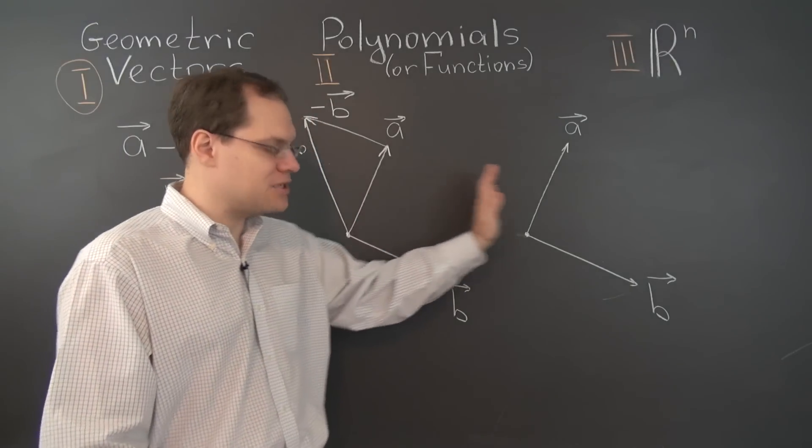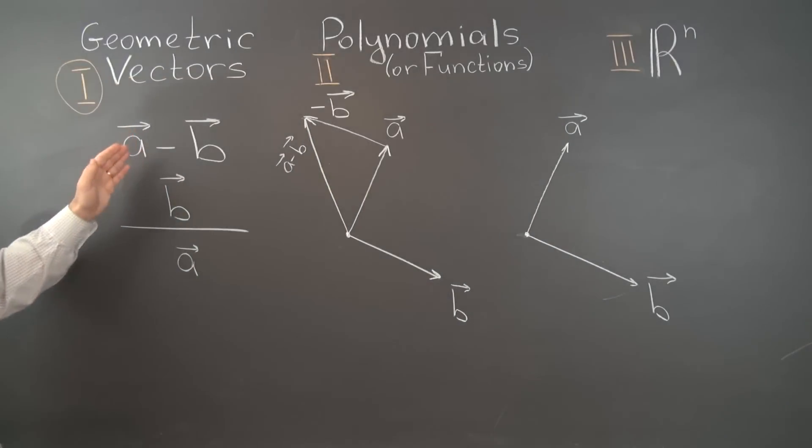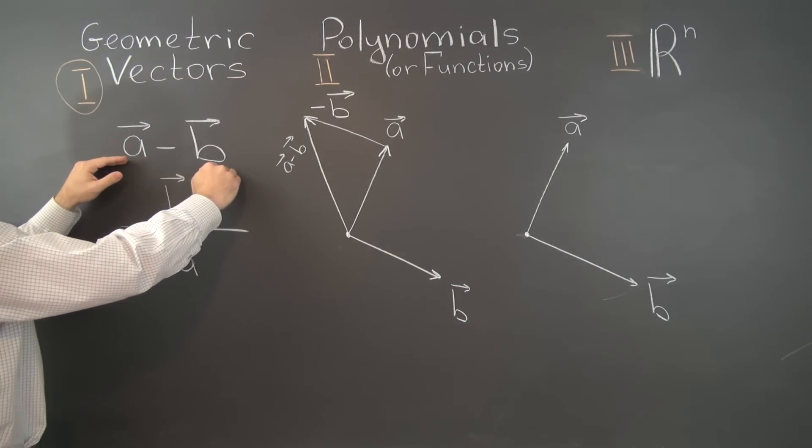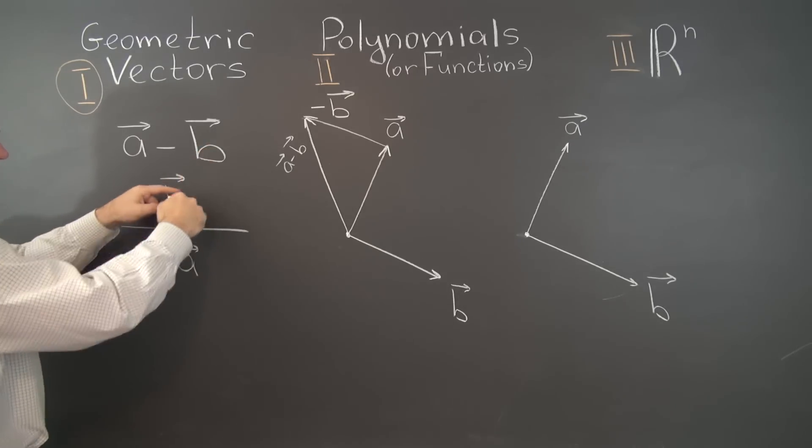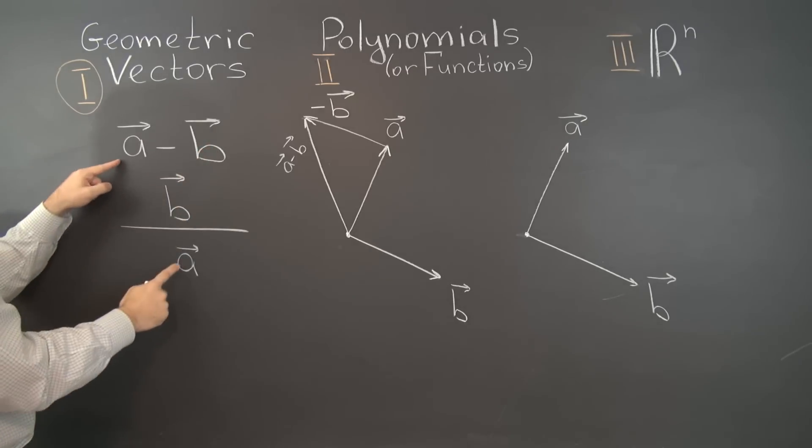For the time being, I'm forgetting about the pictures, just looking at the expressions and realizing that if I take this vector and add B to it, B's will cancel algebraically, and we're left with A.